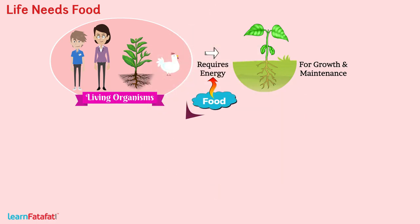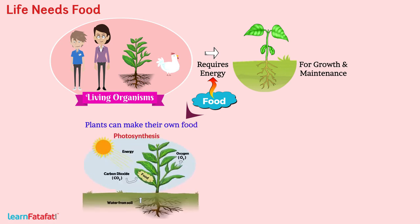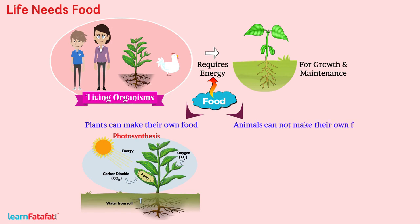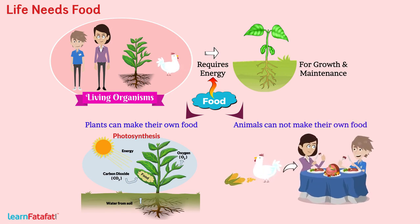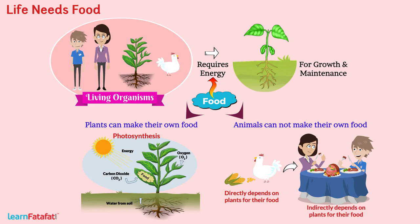You must be knowing that plants can make their own food by the process of photosynthesis. But animals, on the other hand, cannot make their own food. Instead, all animals depend directly or indirectly on plants for their food.